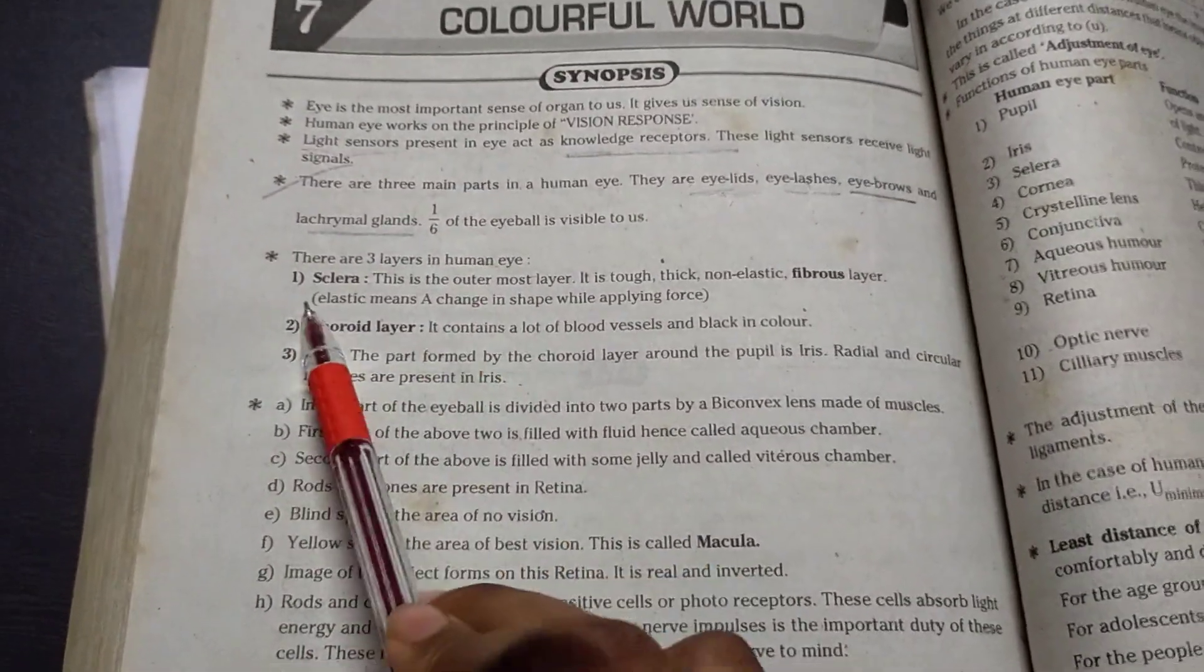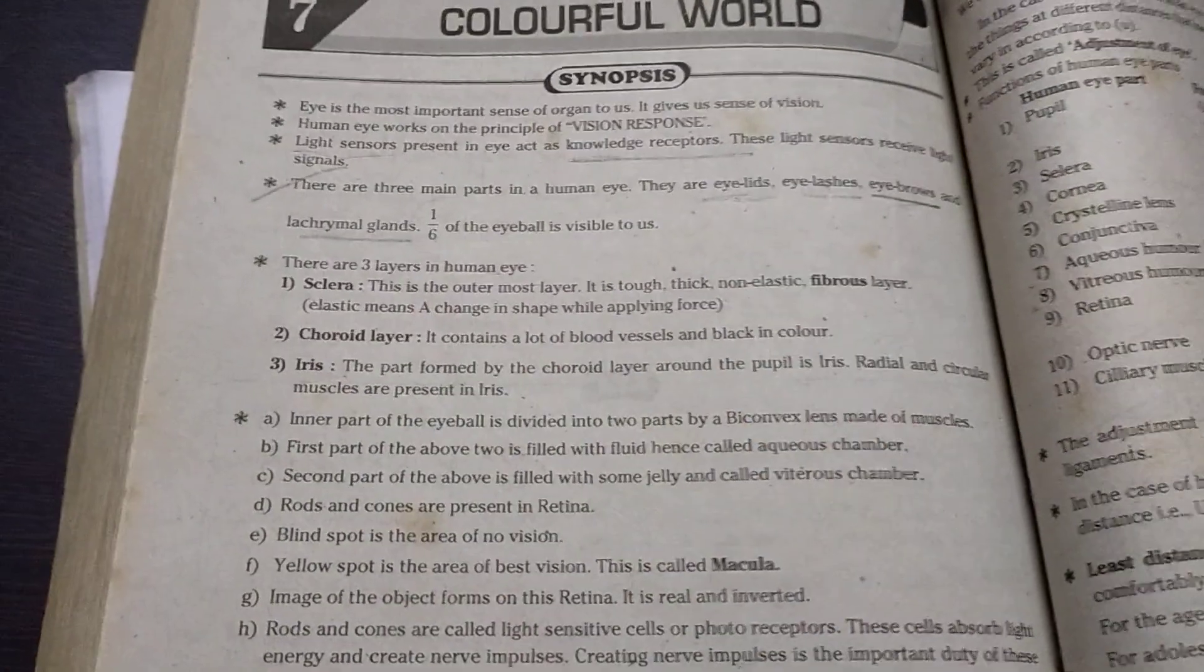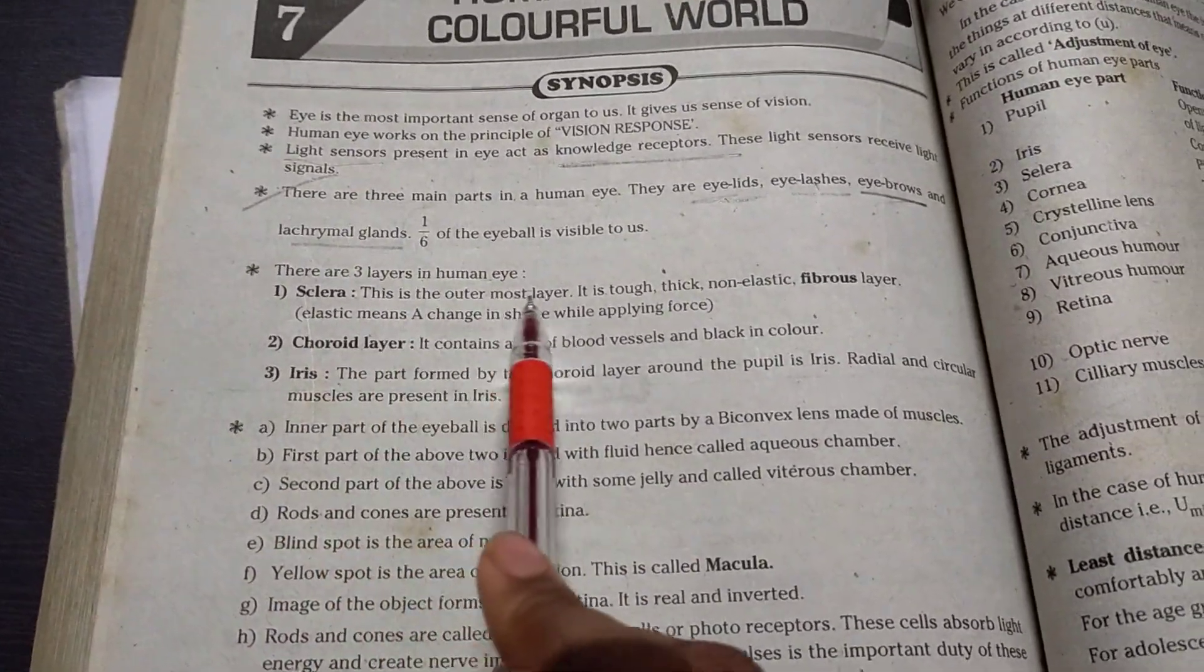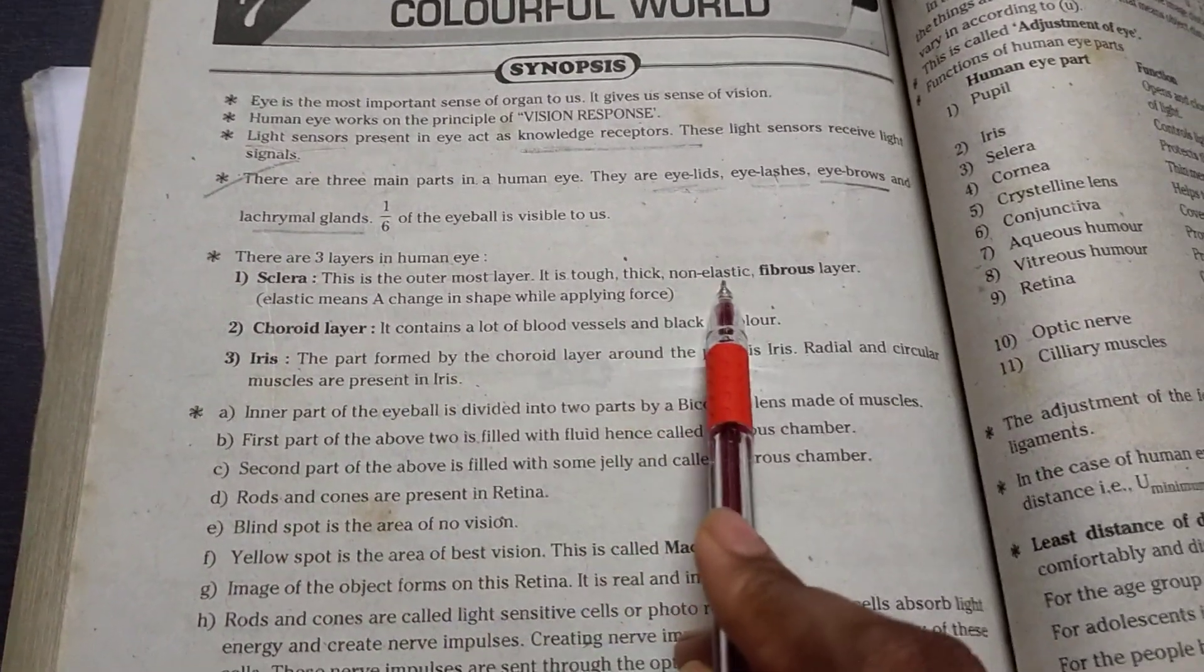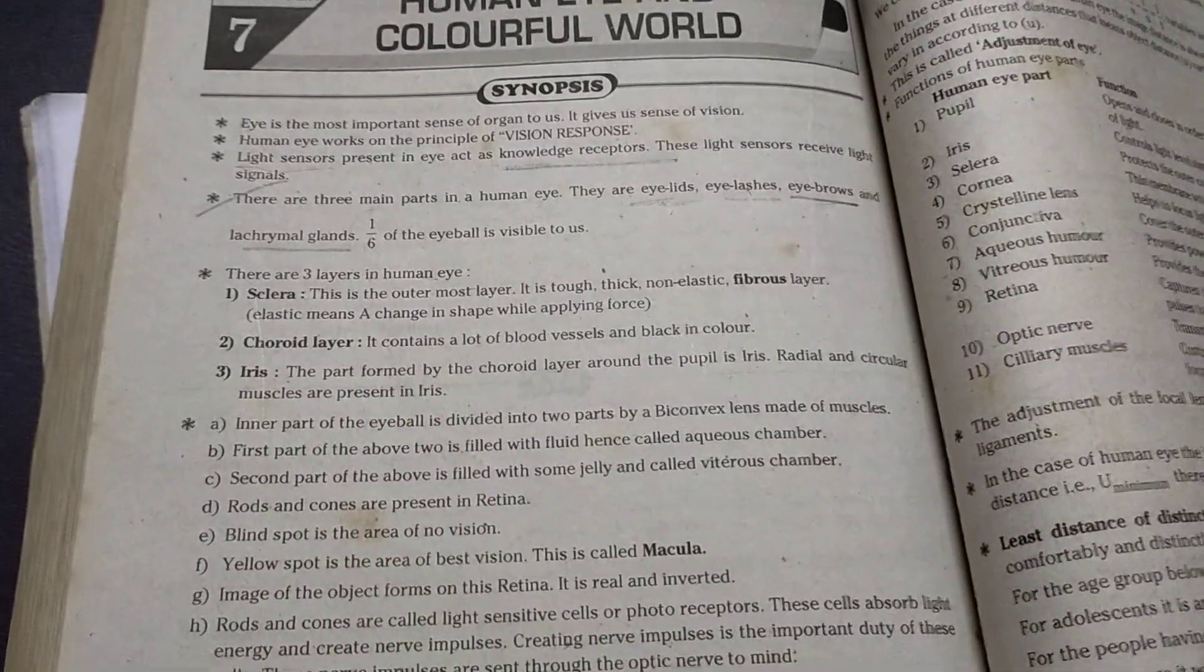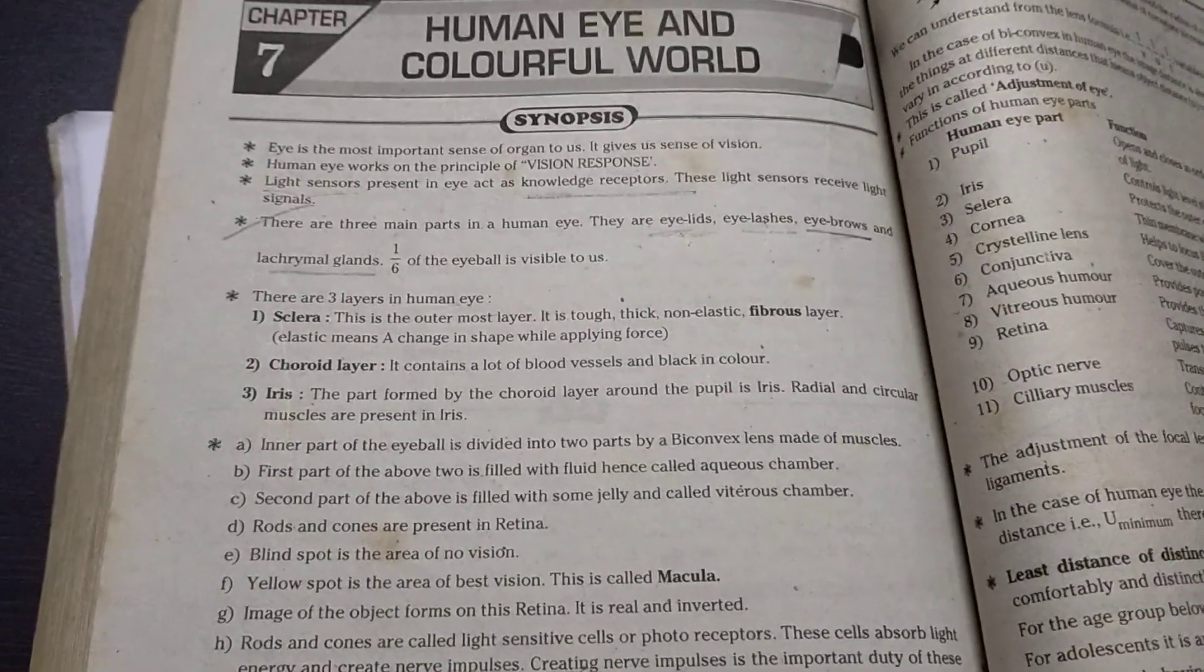There are three layers in human eye that's Sclera, Choroid layer, Iris. So this is the outermost layer. It's tough, thick, non-elastic, fibrous layer. Inelastic means a change in shape while applying force.